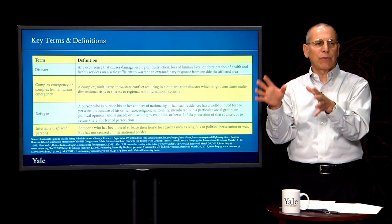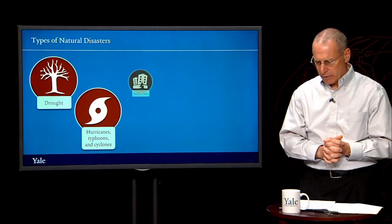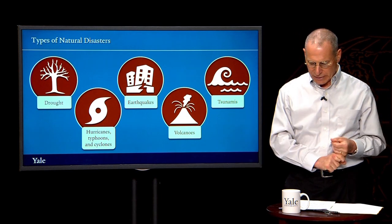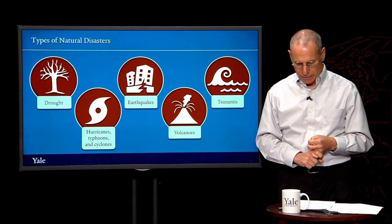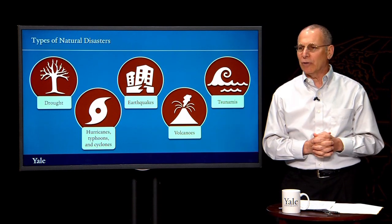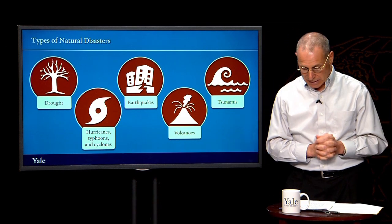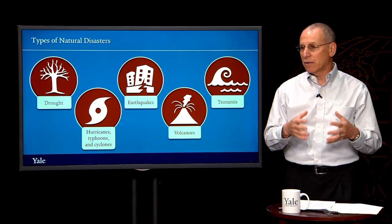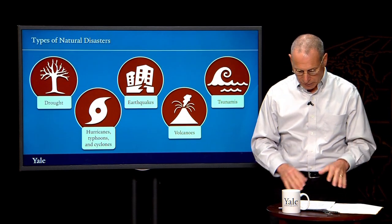Now let's talk about natural disasters separately from complex humanitarian emergencies. There are a number of different types: drought, hurricanes, typhoons, cyclones, earthquakes, volcanoes, and tsunamis, for example. Earthquakes kill the most people and also leave a lot of people injured. Volcanoes don't kill that many people usually, but they can have a destructive impact from mud and ash. Tsunamis can cause a substantial amount of death, generally from drowning.